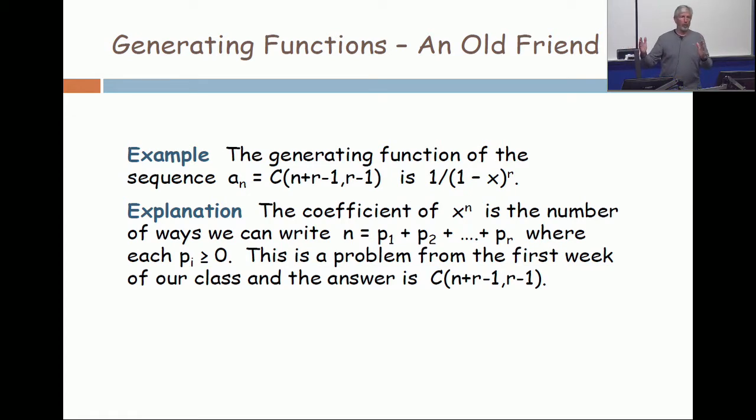Each of those terms taken individually produces a geometric series: 1 + x + x^2 + x^3 plus... And now I get another one: 1 + x + x^2 + x^3. And then I get another one. I get r of them all together.